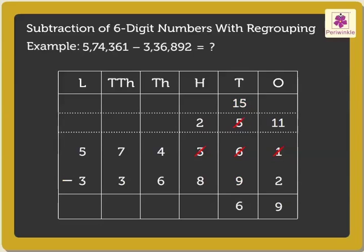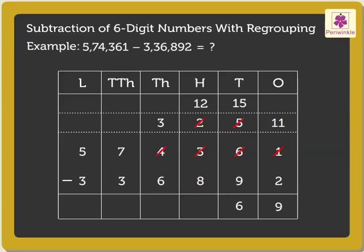Now subtract the hundreds, i.e., 2 minus 8. As there are not enough hundreds, we regroup 4 thousands and 2 hundreds as 3 thousands and 12 hundreds. Therefore, 12 minus 8 is equal to 4.